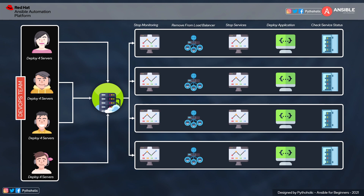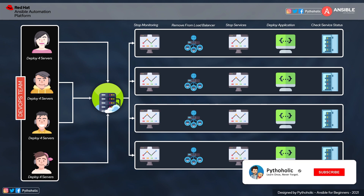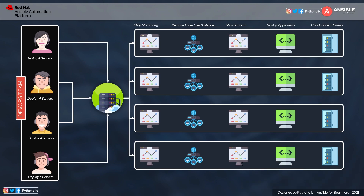The steps they need to perform are: first, stop the monitoring activity or service; then disassociate the instance from the load balancer; stop the service again; deploy the application and check the service status; and if that works, associate it back to the load balancer. All of them have to repeat the same steps across all the servers. The team was using shell scripts to achieve this, but they were unable to reach the level of automation they needed — and that's where Ansible could make a difference.